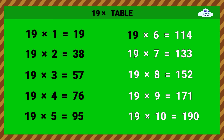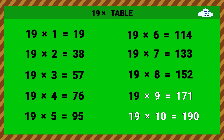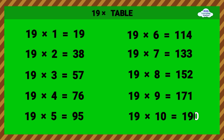19 times 6 equals 114. 19 times 7 equals 133. 19 times 8 equals 152. 19 times 9 equals 171. 19 times 10 equals 190.